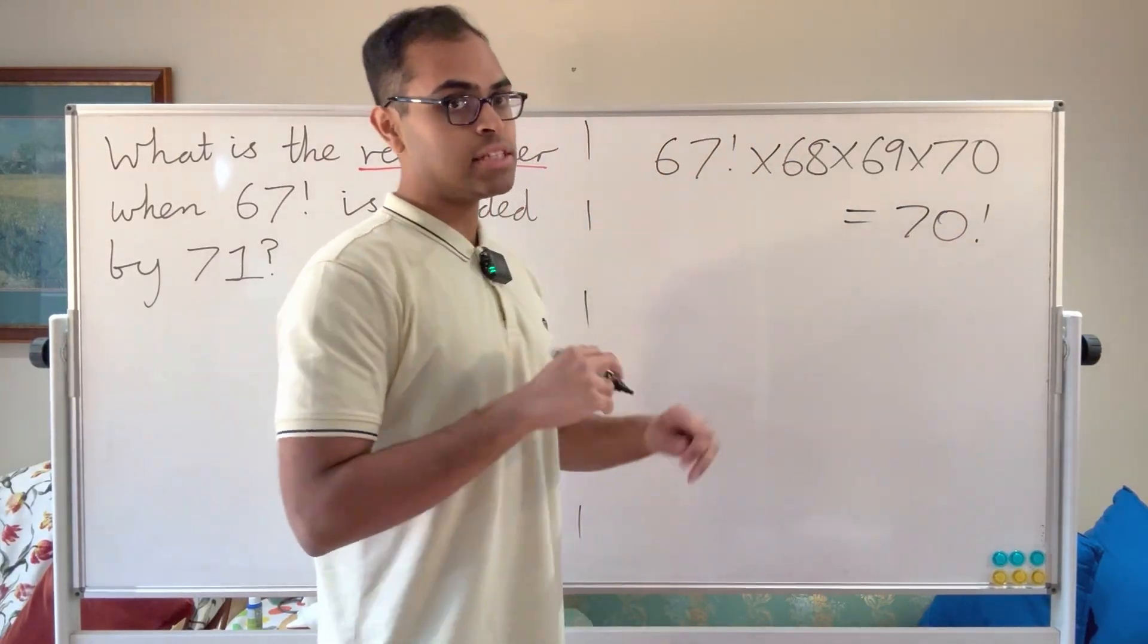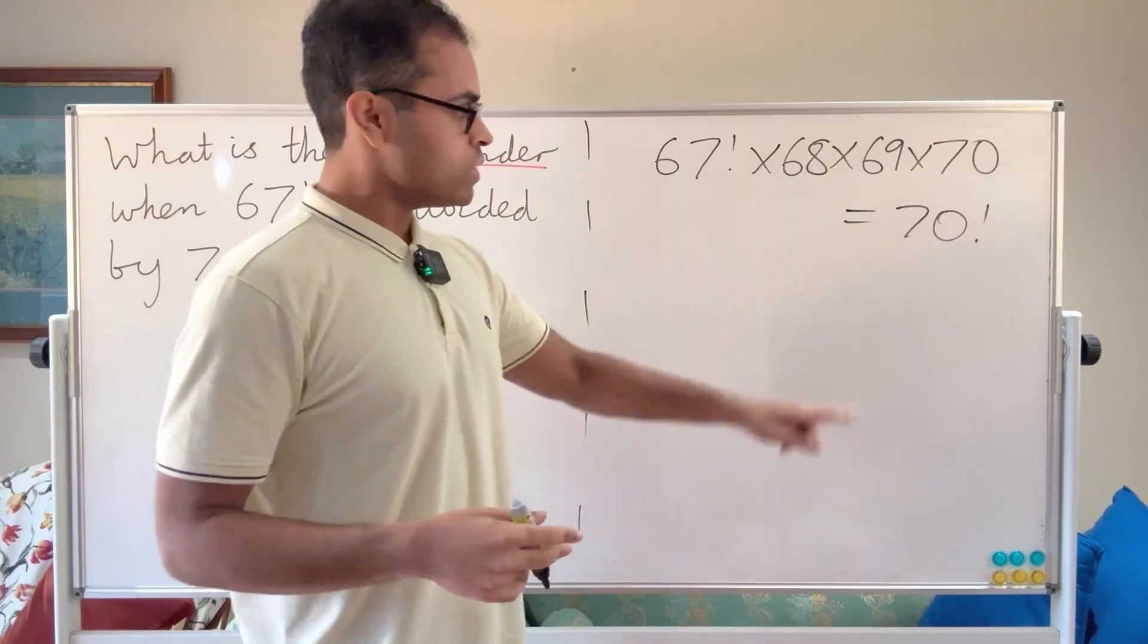Remember, 67 factorial is the product of all the numbers 1, 2, 3, up to 67. So we get 70 factorial there.